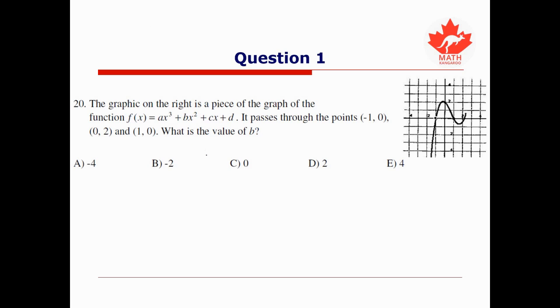For the first question, we're told the graphic on the right is a piece of the graph of the function f(x) = ax³ + bx² + cx + d. It passes through the points (-1, 0), (0, 2), and (1, 0). We're asked to find the value of b.